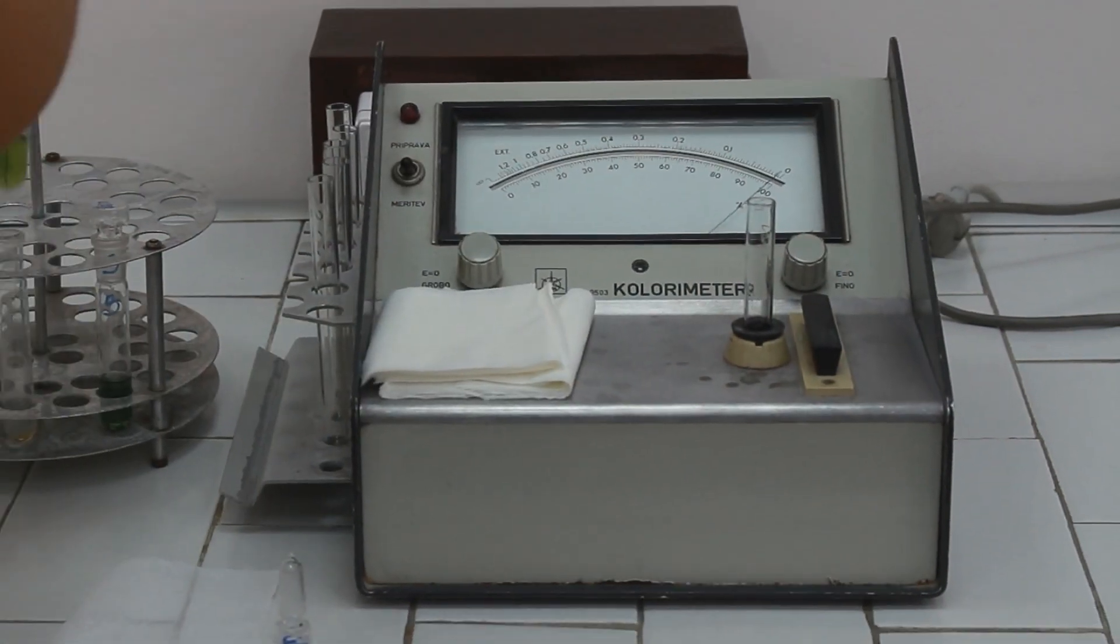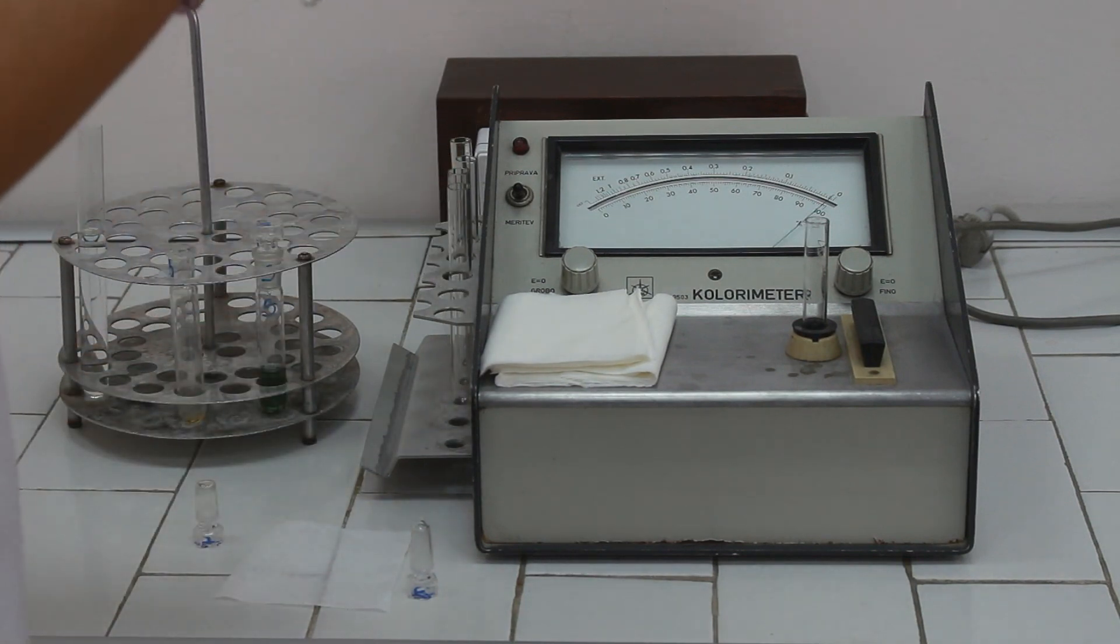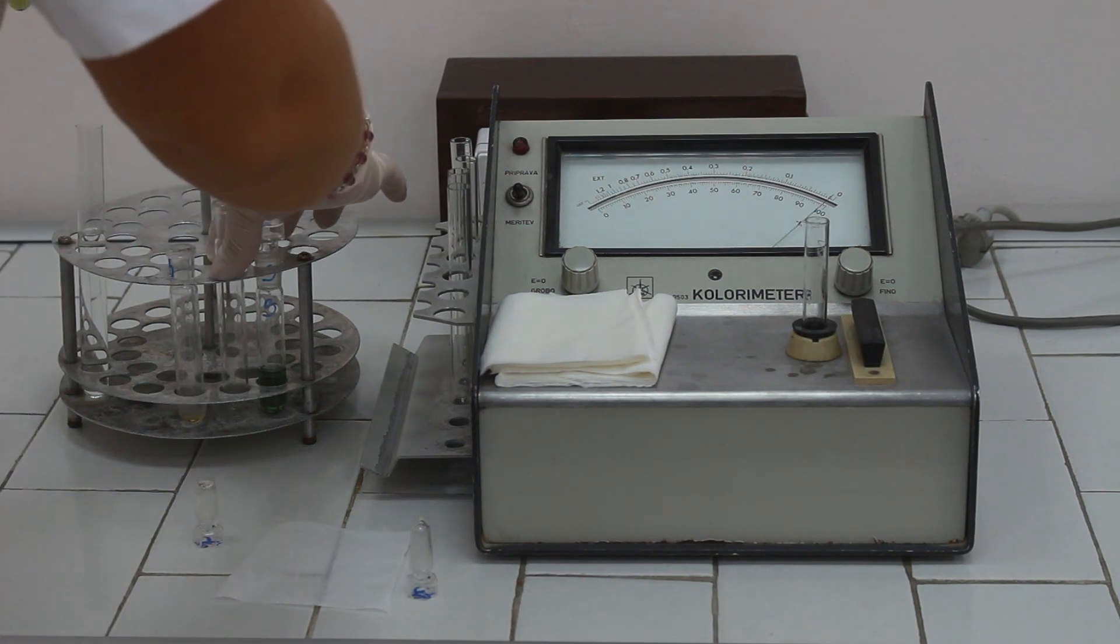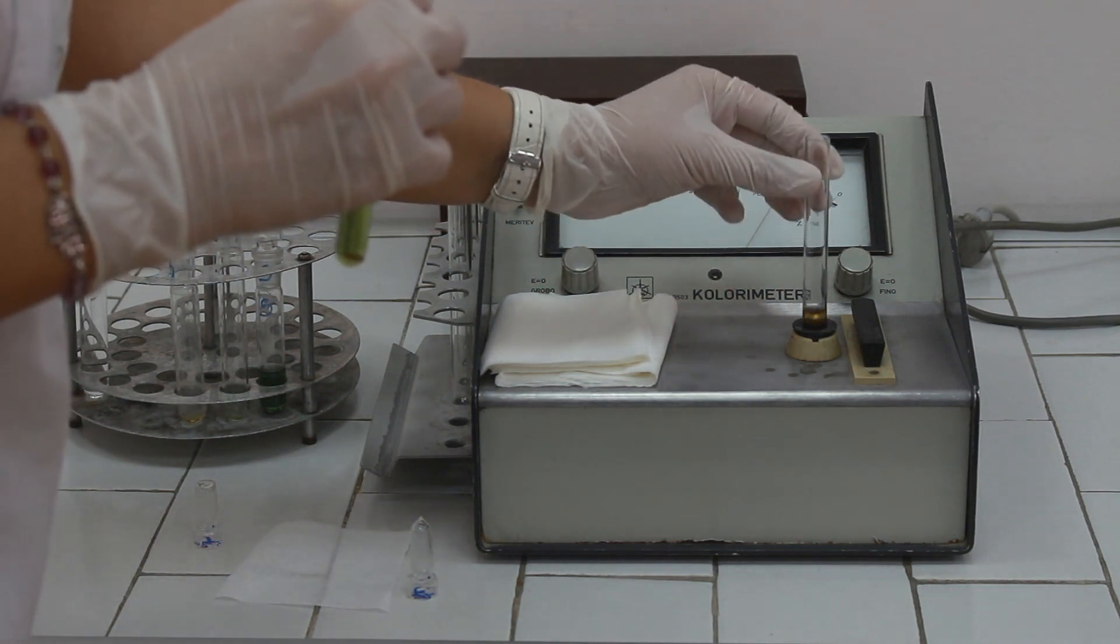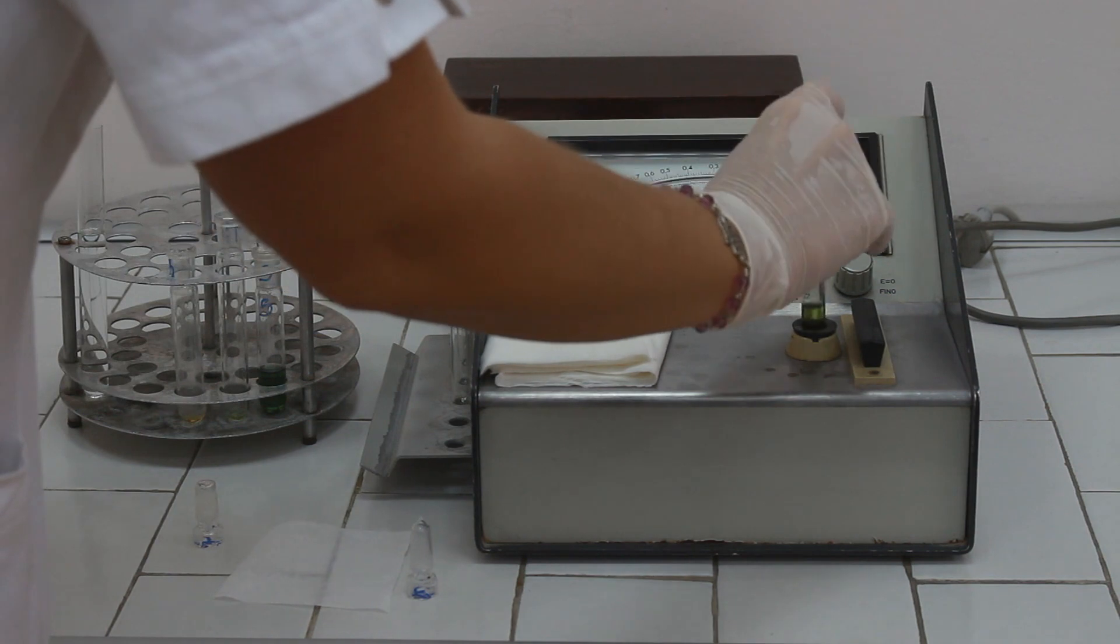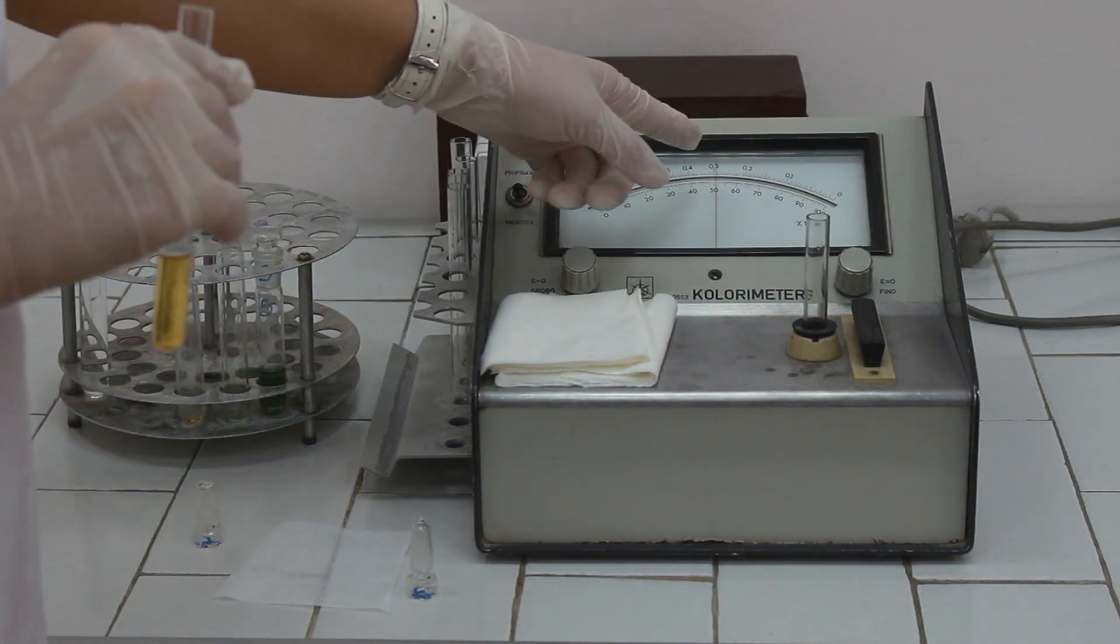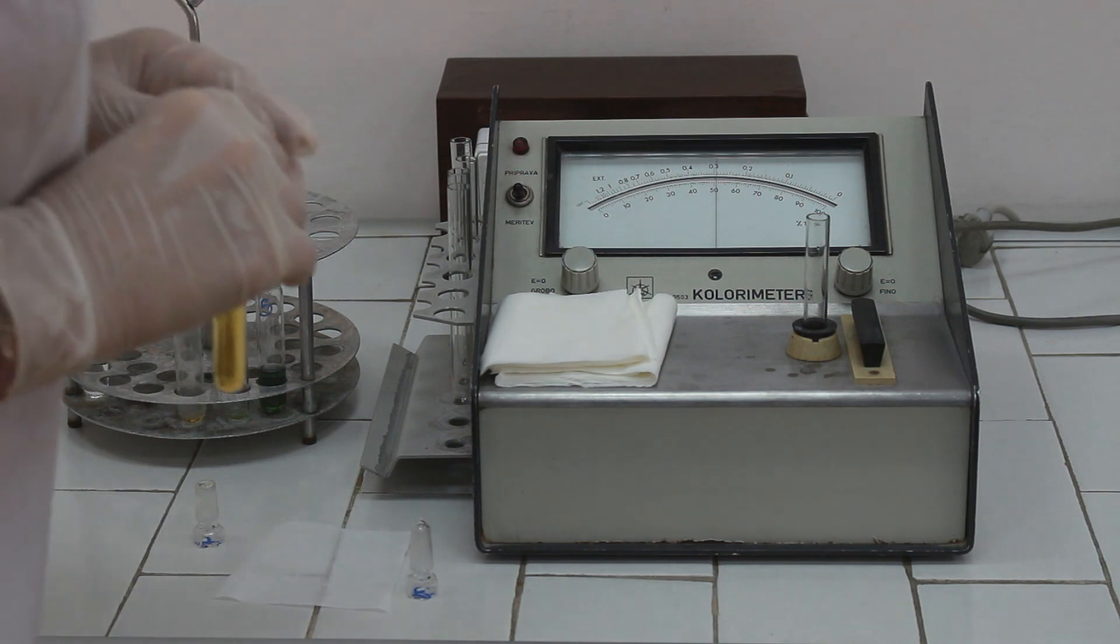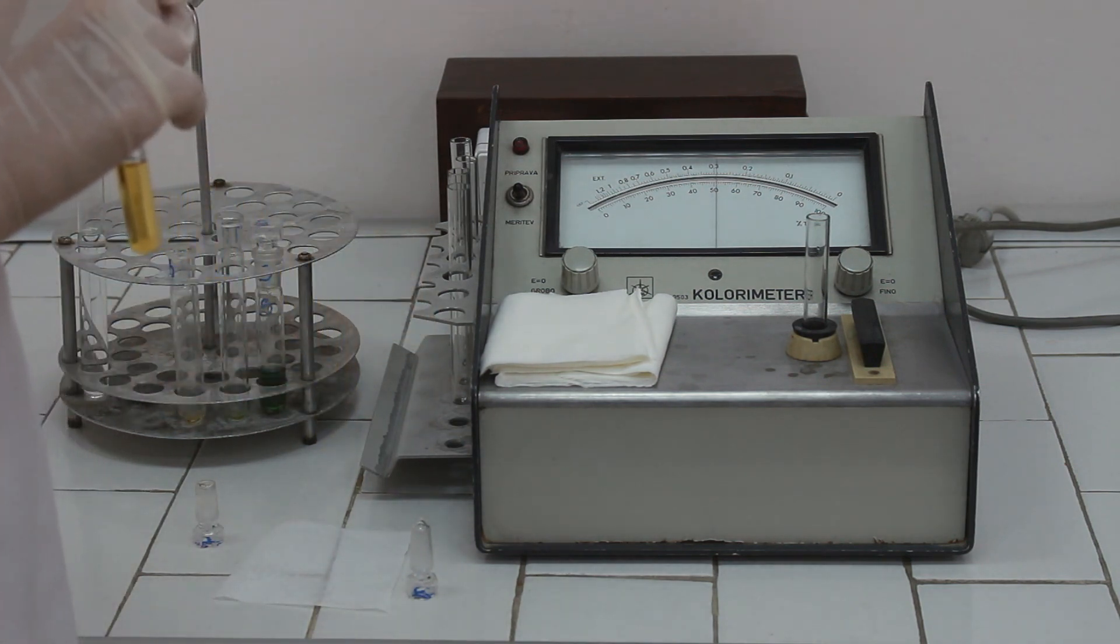When the zero is adjusted, we can pour the test solution to another cuvette. Take out the blank cuvette and put the test cuvette. Read the absorbance. In this case, the absorbance is 0.29.